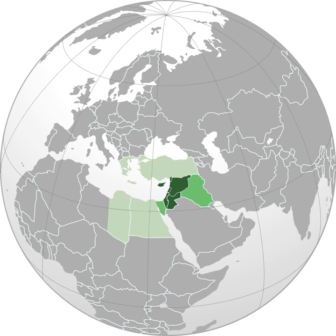The Levant extended from Greece to Cyrenaica. The term entered English in the late 15th century from French. It derives from the Italian Levante, meaning "rising", implying the rising of the sun in the east, and is broadly equivalent to the Arabic term Al-Mashriq, meaning "the land where the sun rises".